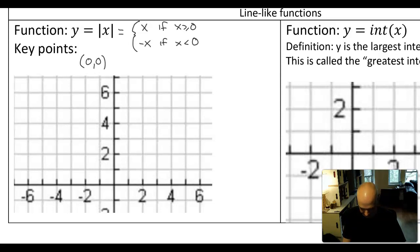So key points, (0,0), (1,1), (2,2), and then also (-1,1), (-2,2), because it takes negatives and makes them positive. Let's plot those points and see what we get.